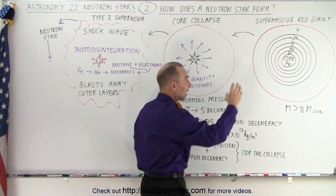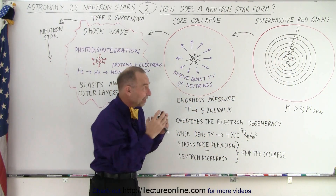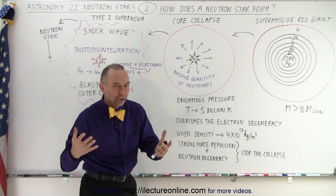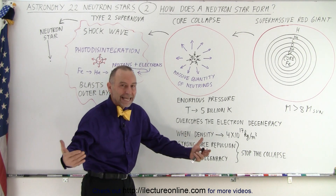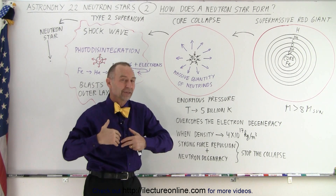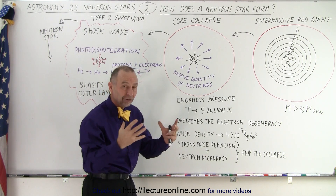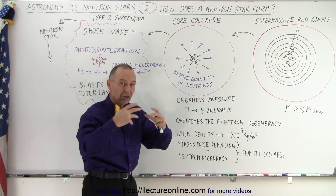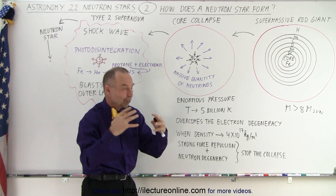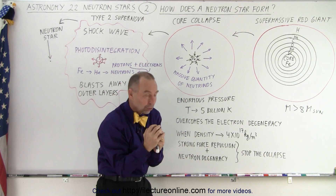Once the core fills with iron, any additional fusion attempted in the core will not result in the expulsion of energy but will result in the intake of energy. It becomes an endothermic instead of an exothermic nuclear reaction. Therefore, the core begins to absorb energy rather than expelling it, and the radiation pressure that kept the star at its size all of a sudden stops in the core.